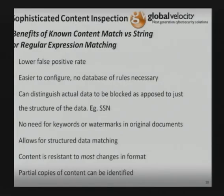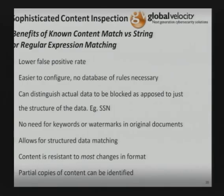Advantages of this fingerprinting process: they're easier to configure — as opposed to regular expressions, you don't have to write all the rules. You merely point the indexer at the content you're trying to protect. It allows for structured data matching where a database comes into play. You can do weighting assigned to various tables, columns, or amounts of data, and set priorities based on number of records. The last major advantage is the ability to protect partial copies of content. If somebody pulls an Excel spreadsheet and scrapes some data into a Word document, adds freeform text, turns it into a PDF, zips it, and tries to send it out, the scanner creates fingerprints from that live data and compares them to what it's been told to protect.